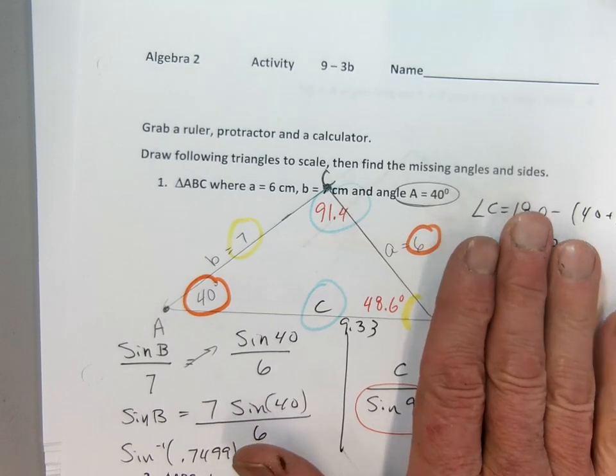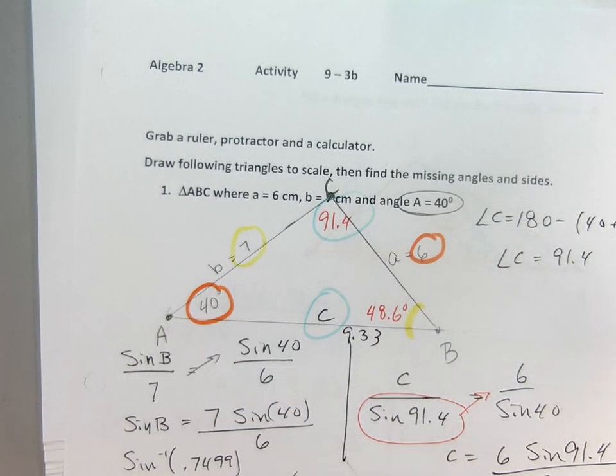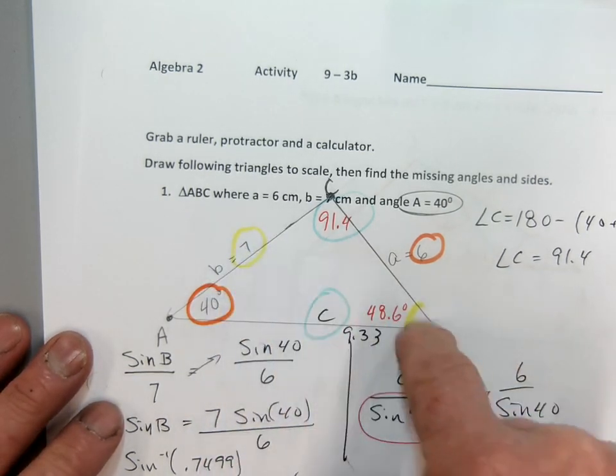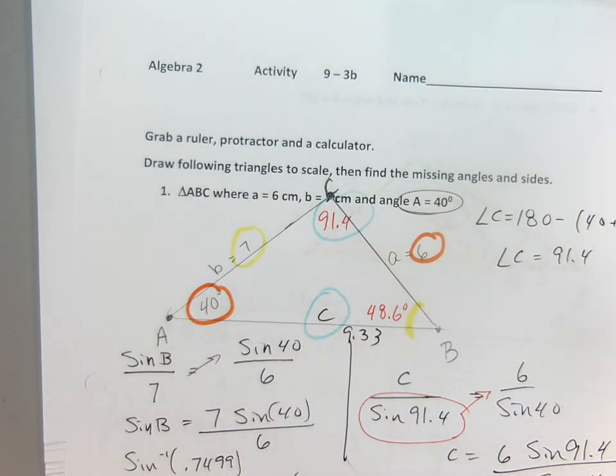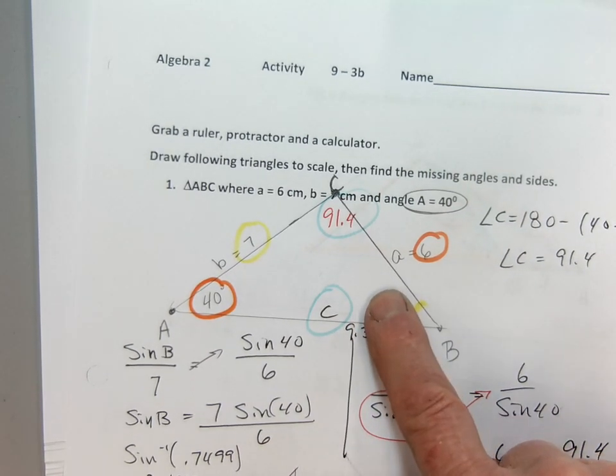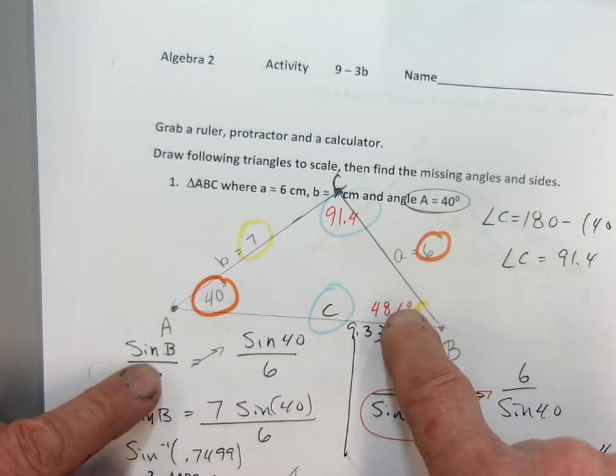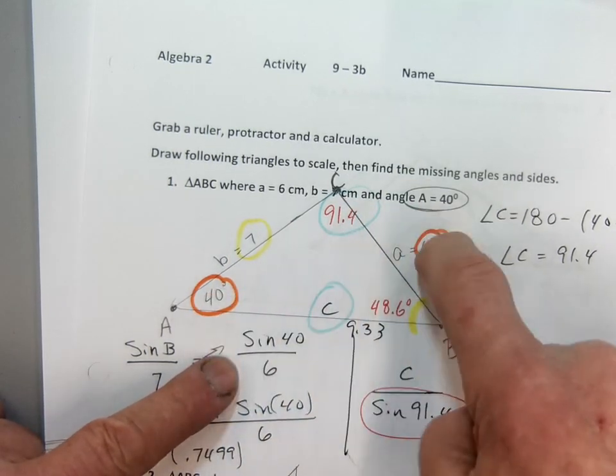So then from here I just did what I've always done, the law of sines. I have a pair of opposites. I set up for a pair of opposites here for angle B. So I set up my sine of B. I like to write the unknown down first. Sine of B over seven is equal to the sine of 40 over six.